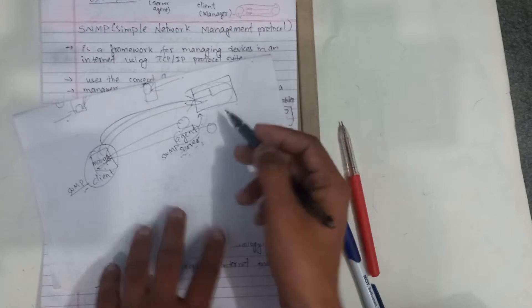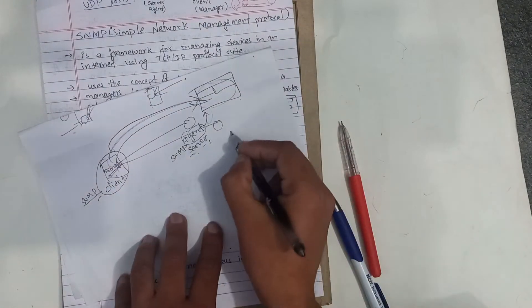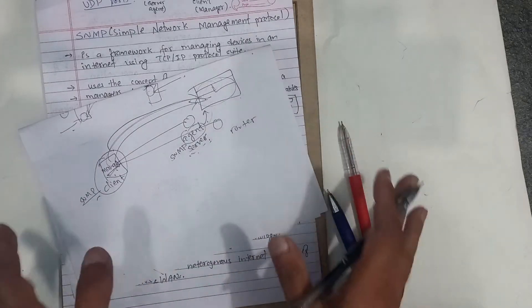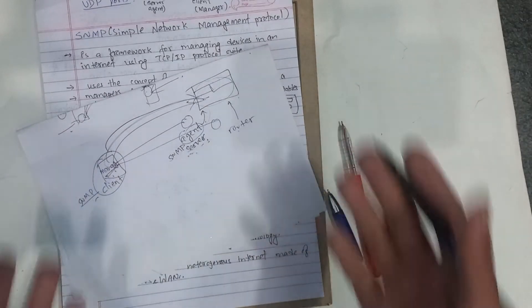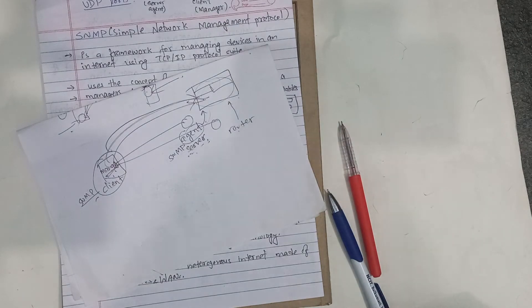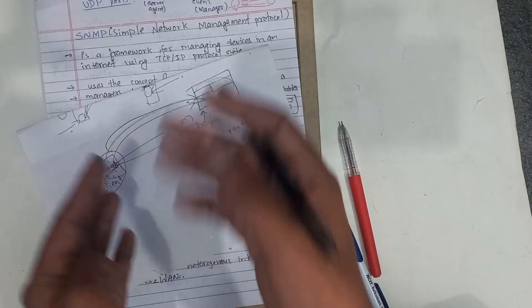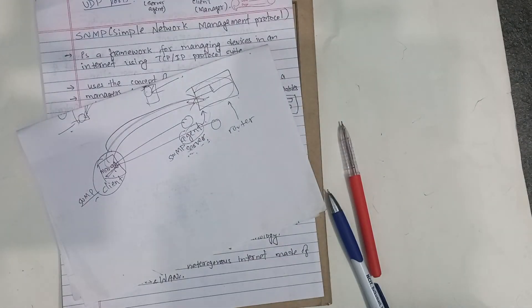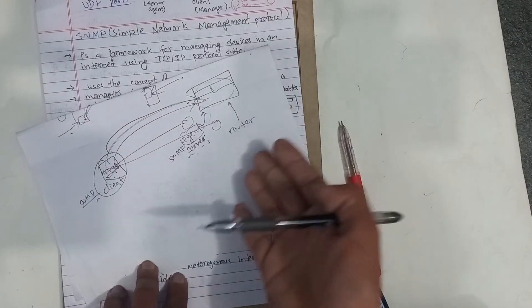For example, consider a particular router. The router has a variable set — for example, received packets, forward TCP packets, and used packets. These are variables stored in the router's agent database.